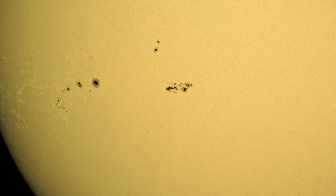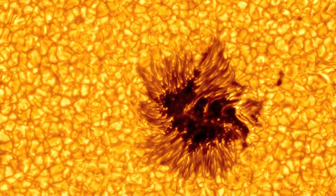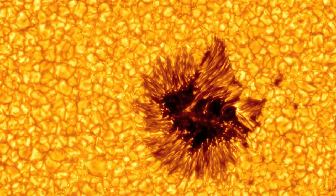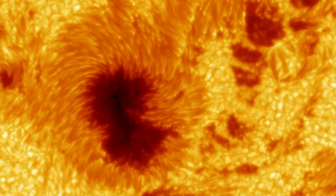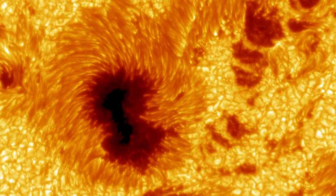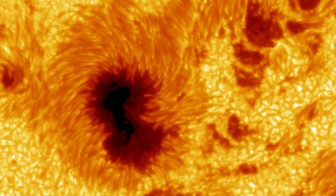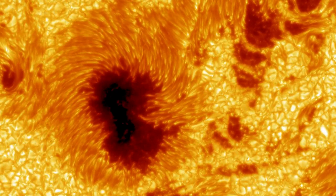Sunspots appear dark because, in these regions, the strong magnetic field limits the transportation of heat to the surface. This process makes these locations much cooler and thus darker in appearance than the surrounding brilliant surface.